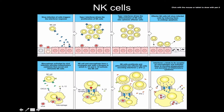Macrophages are resident, tissue-specific cells — so if this were an infection in the lungs, the local macrophages would respond. They start secreting interleukin-12, which binds to the natural killer cell, along with CXCL chemokine to recruit them to the site of infection. So interleukin-12 activates the natural killer cells, while CXCL tells them where to go — and all of that is brought about by macrophages.